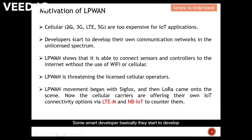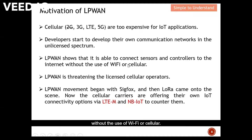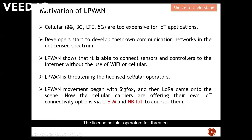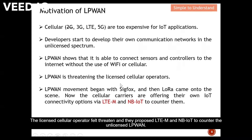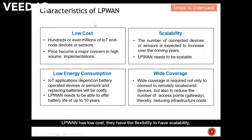Some smart developers started to develop their own communication networks in the unlicensed band for LPWAN, such as Sigfox. Sigfox is one of the pioneers of LPWAN, showing they are able to connect actuators and sensors to the internet without the use of Wi-Fi or cellular. Licensed cellular operators felt threatened — they remember how WhatsApp took away their overseas call and SMS business — and they proposed LTE-M and NB-IoT to counter the unlicensed LPWAN. LPWAN has low cost, flexibility, scalability, low energy consumption, and wide coverage.